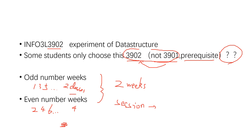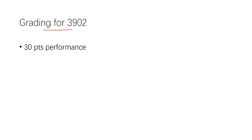I will combine the odd and even number weeks and call it a session. Next is about the grading for this course. I've mentioned grading before but that was for the theory course 3901. Here is the grading for the experiment course 3902: it's 30 points for performance.